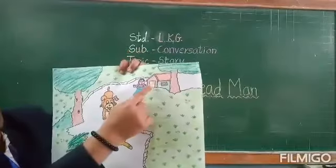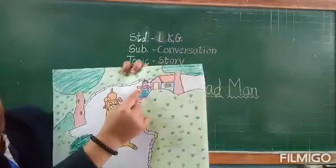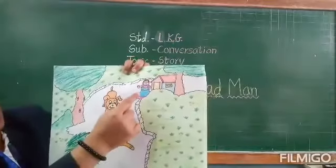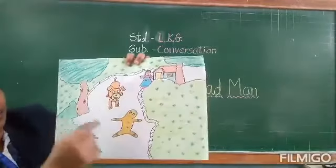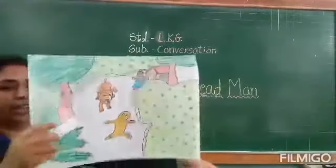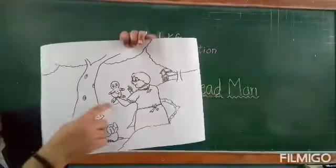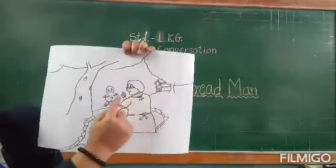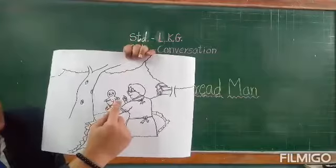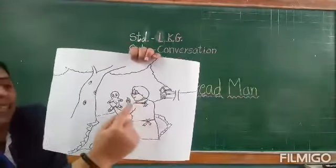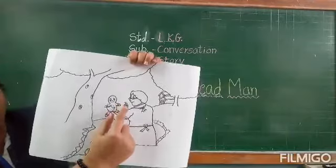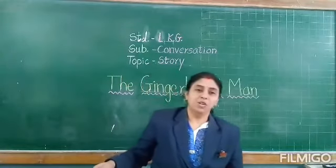The old lady came out from the house and she saw the Gingerbread Man was running on the road. And a dog was chasing him, so she also ran behind the dog. When the Gingerbread Man saw the dog, the Gingerbread Man was scared. In the next picture, this old lady ran fast and came and picked up the Gingerbread Man. The Gingerbread Man was happy, and he says to the old woman that now he will never leave the house and will not go out. So students, you have understood the story.